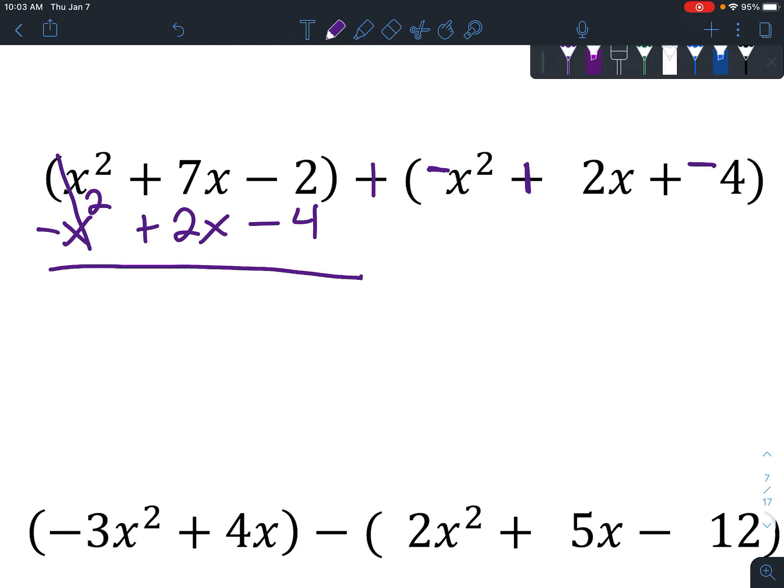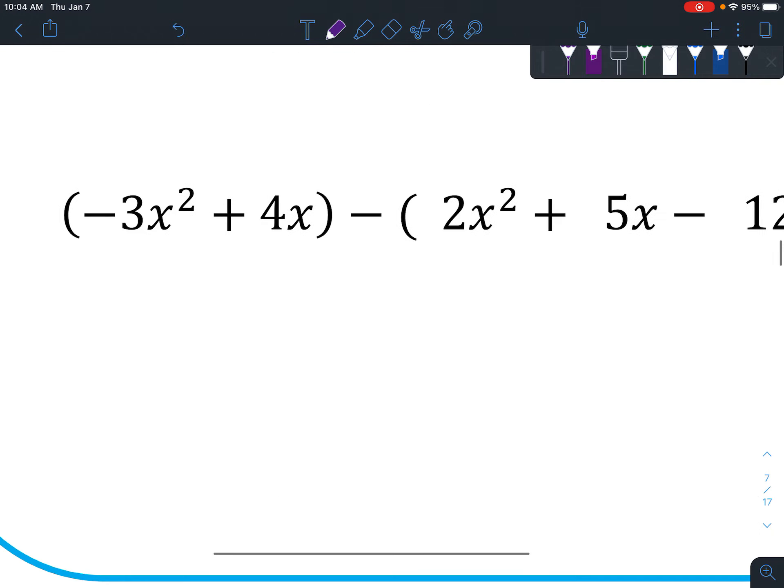So if you have an x squared and you take away an x squared, you've got nothing, right? That's just 0. And if it's 0, you don't have to actually write it. And then 7x plus 2x is 9x. Think of this as a negative 2 plus a negative 4, and you get negative 6. Or think of it as taking 2 away, and then you're taking 4 more, and all of them together, you're taking away 6.